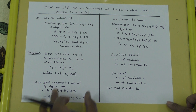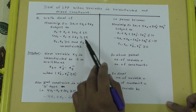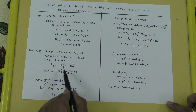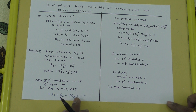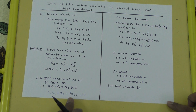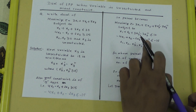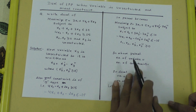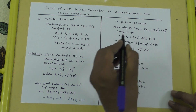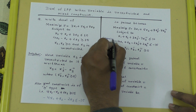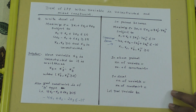This form is the primal in canonical form — because the objective is maximization type, all constraints are less-than type, and all decision variables are non-negative. In this primal, if we count the variables: x1, x2, x3', and x3'' — the number of variables is 4. The number of constraints is 2.